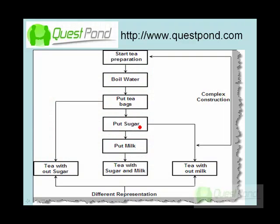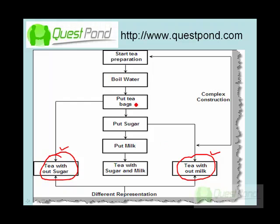Let's look into a very practical example. You can have a tea without sugar — this is a very live example I want to show you, so that you can understand and map it to software. You can have a tea with sugar and you can have a tea without milk. These are two types of representations, the final outputs. To construct them, the process is very similar.